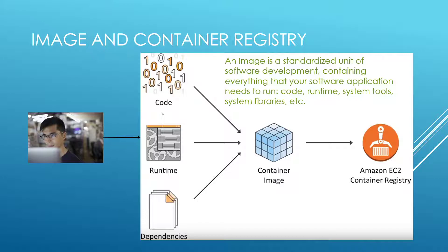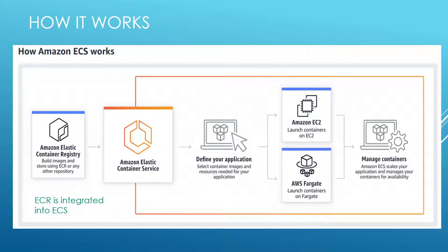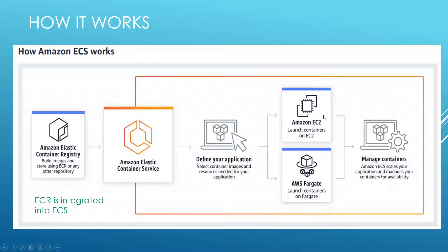A container registry is basically like a GitHub for your images — you can version your images and have multiple repos. So you build an image, push it to your container registry just like you push your code to GitHub, and ECS takes that image and deploys your application. This task definition here is a basic JSON text file where you specify the number of CPUs, memory, and all that stuff.